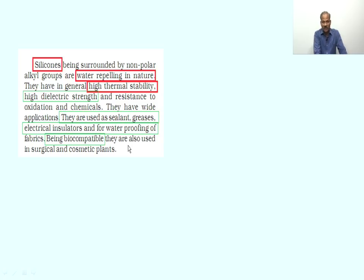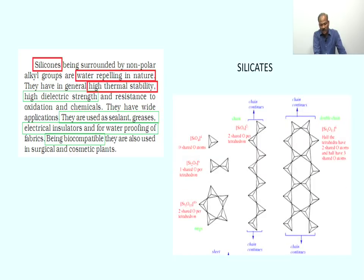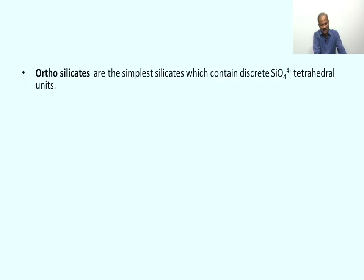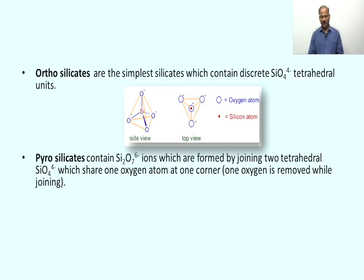The last category of Group 14 elements is silicates. There are many types of silicates. The simplest are orthosilicates, which contain [SiO₄]⁴⁻ tetrahedral units where no oxygen of these units is shared with any neighboring units. So they exist in discrete form. The structural representation shows the tetrahedral form with side view and top view.